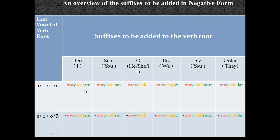For 'sen' it is 'mayacaksın.' For third person singular (he/she/it), there is never a personal suffix — just 'mayacak.' For 'biz' it is 'mayacağız' — note that 'k' changes to 'ğ' because the personal suffix 'ız' starts with a vowel. For 'siz' it is 'mayacaksınız.' For third person plural 'onlar' it is 'mayacaklar.'